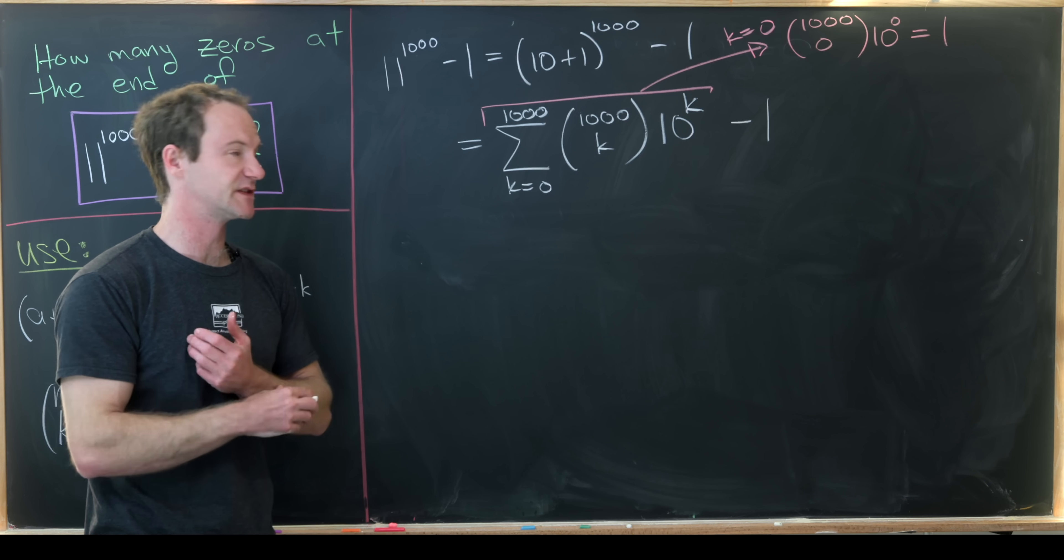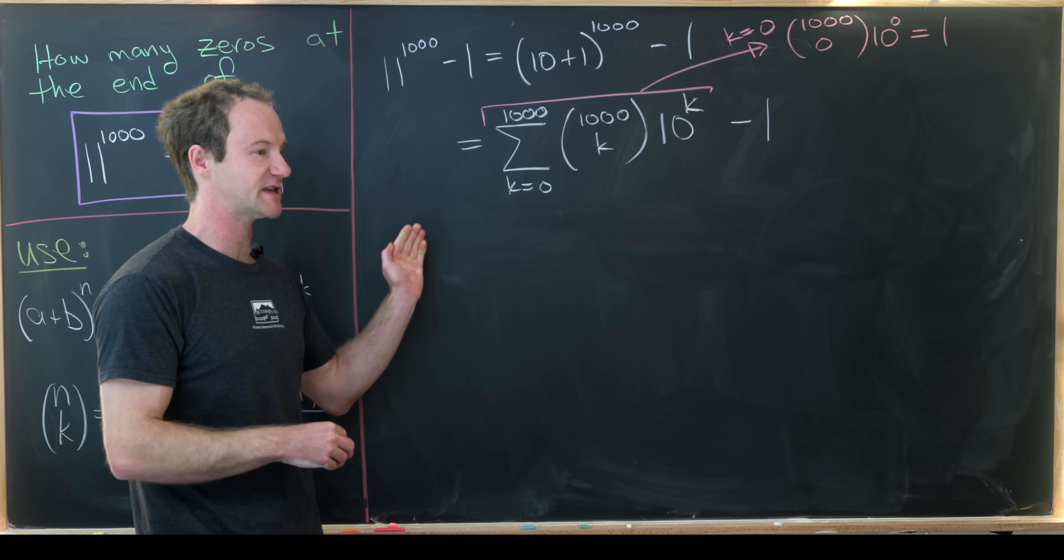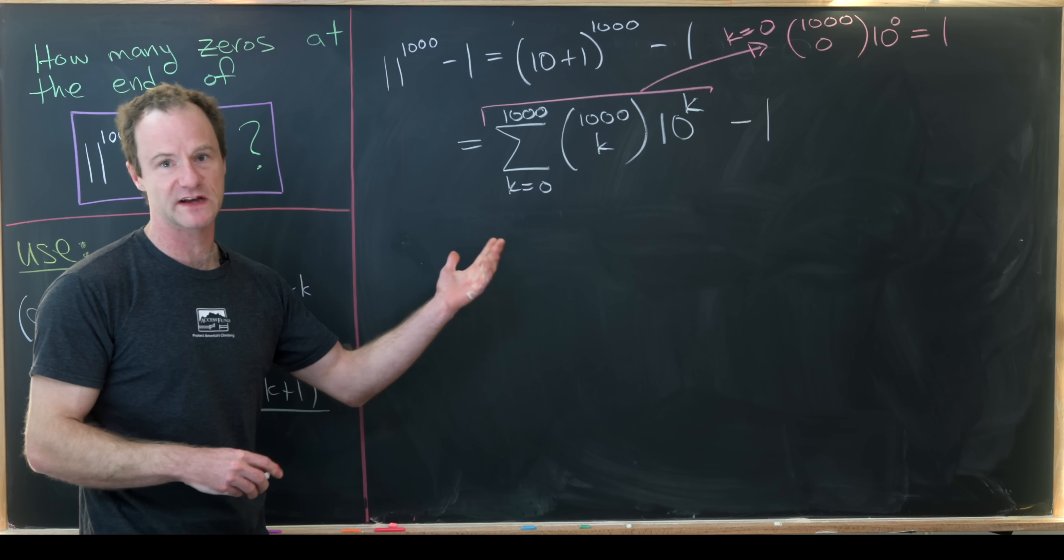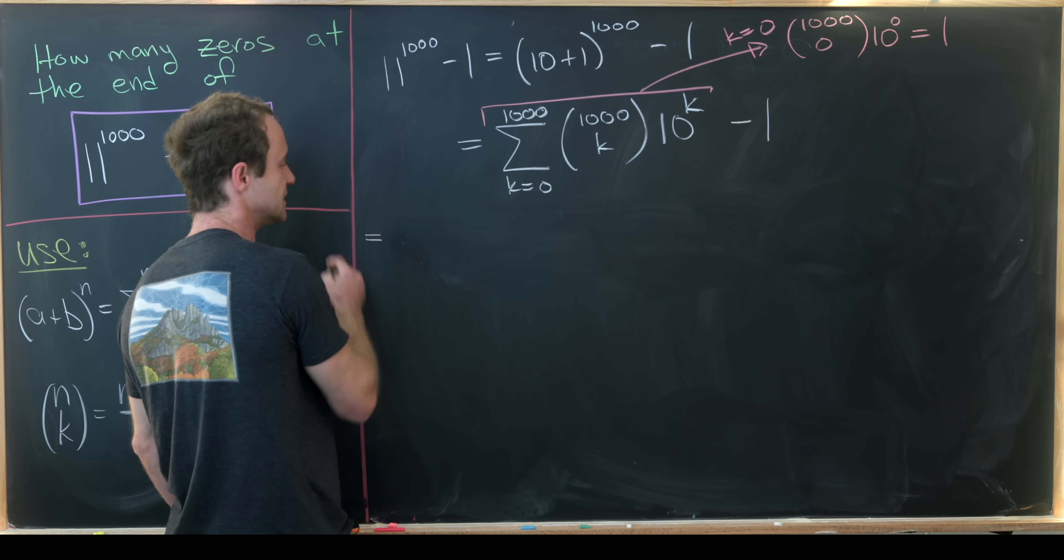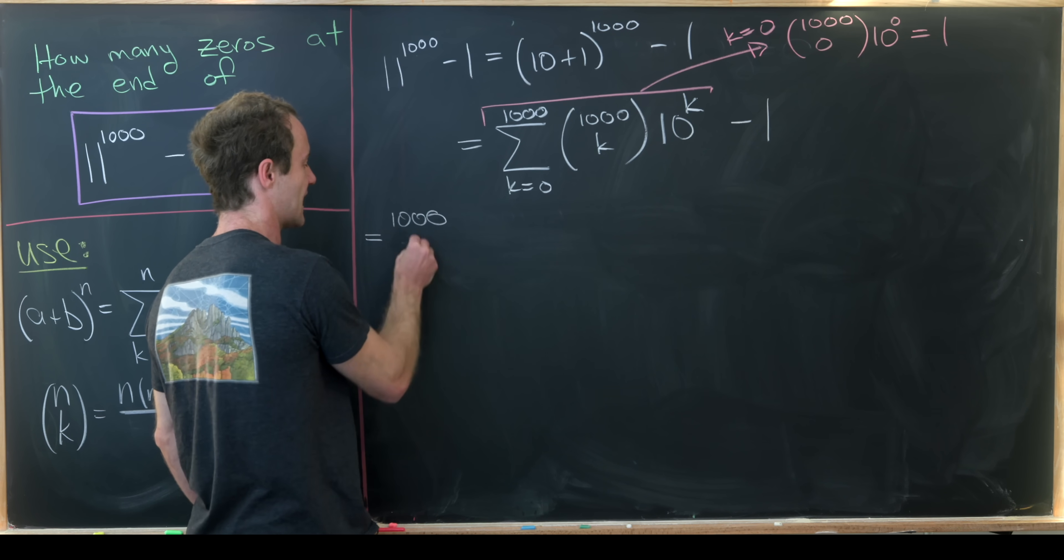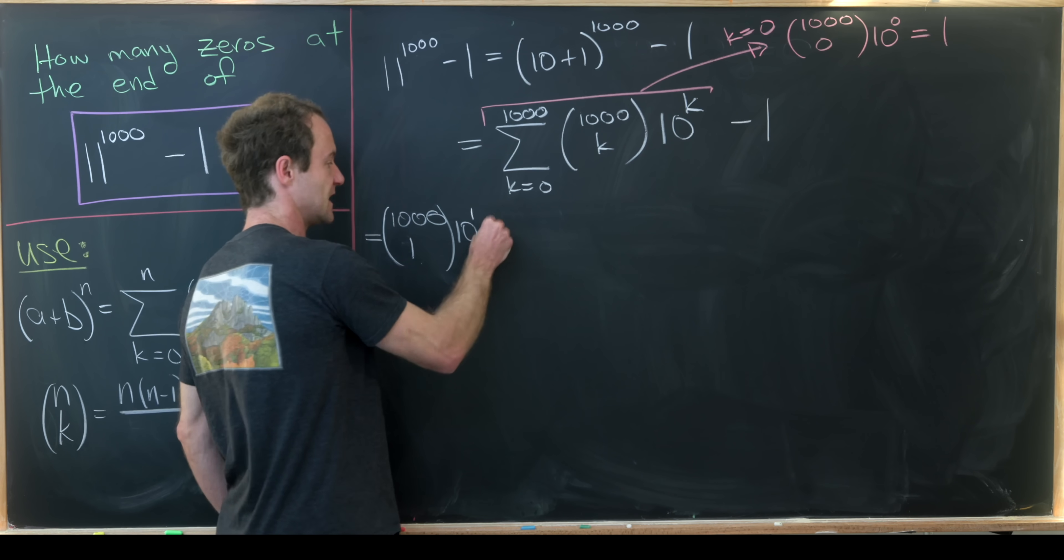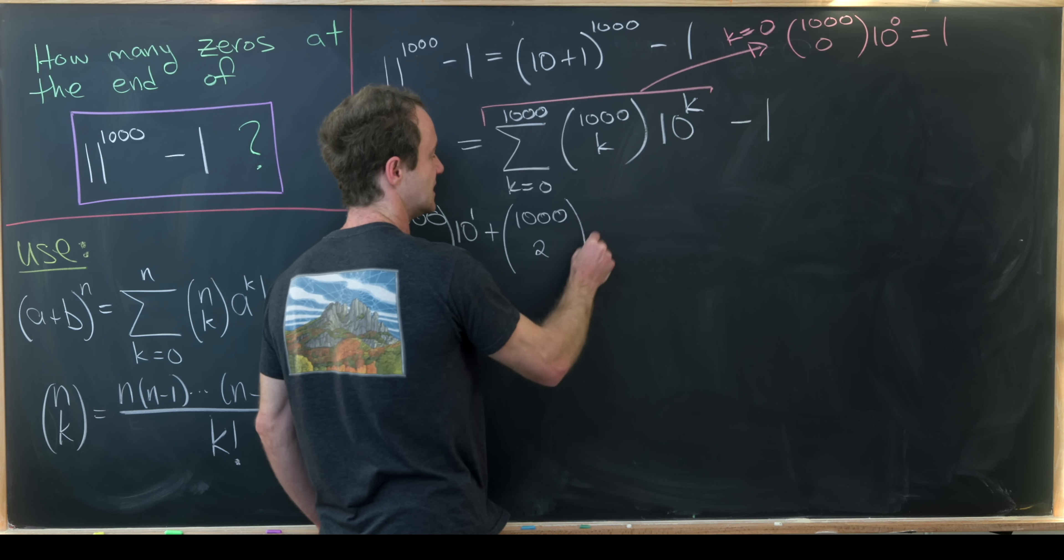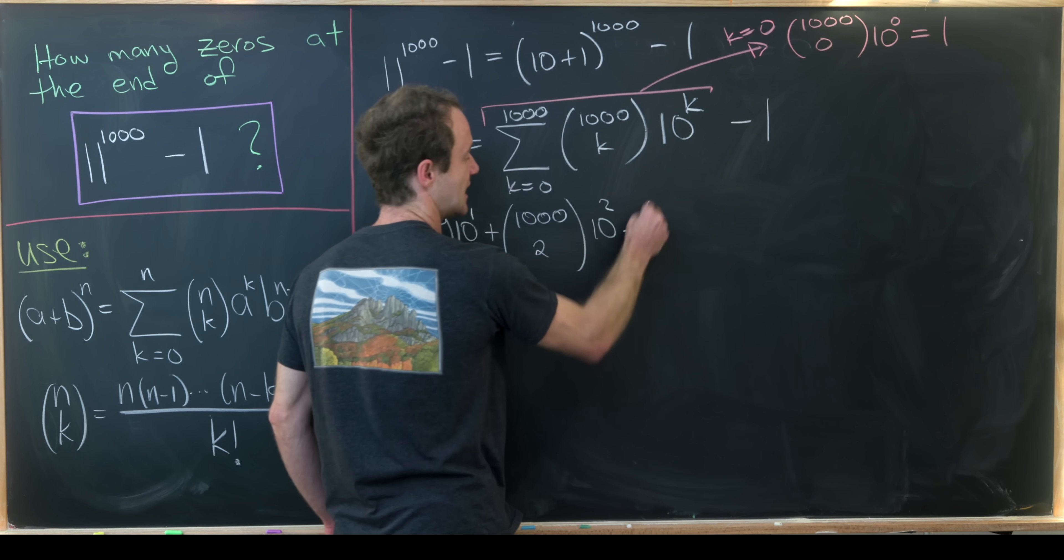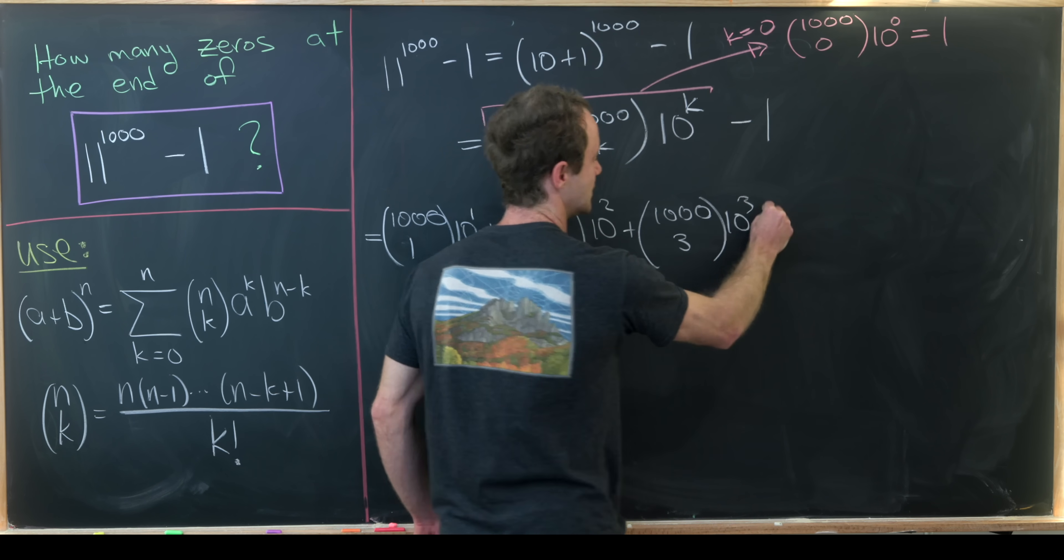Okay so we've canceled the zeroth term and now we're going to take the first four terms out of the sum and then write the rest of the sum all bundled up into this summation notation. So our first term left over will be 1,000 choose 1 times 10 to the 1, and then the next one will be 1,000 choose 2 times 10 squared, and then we'll have 1,000 choose 3 times 10 cubed.